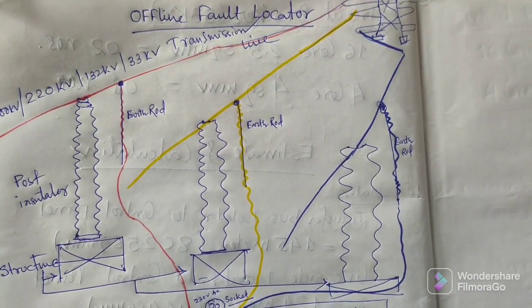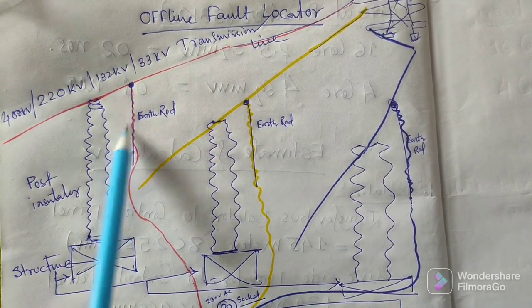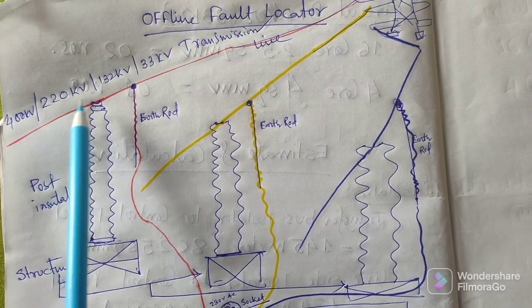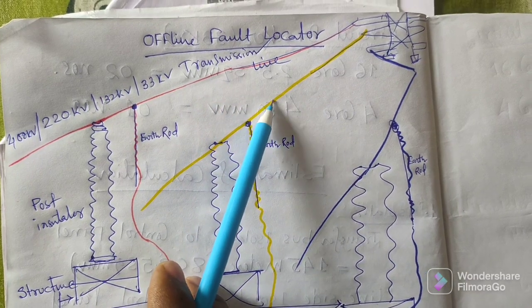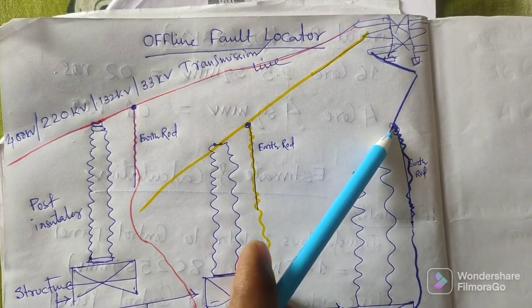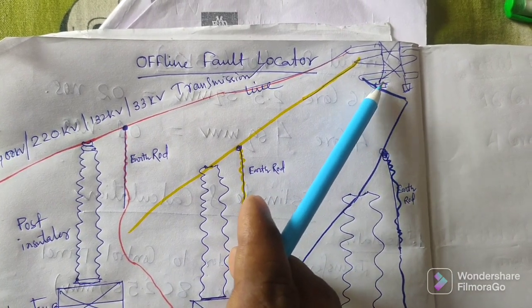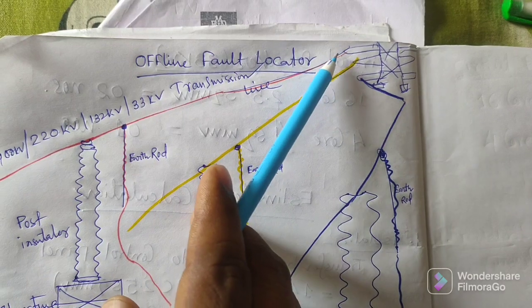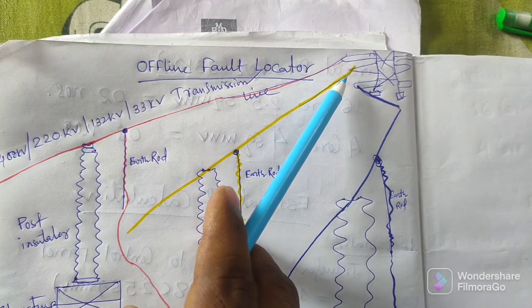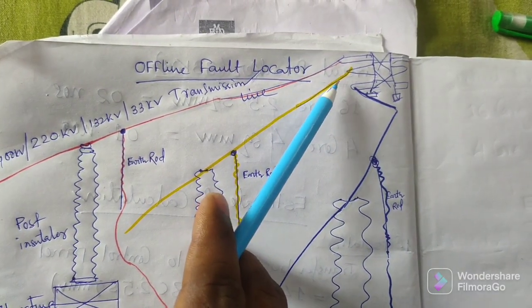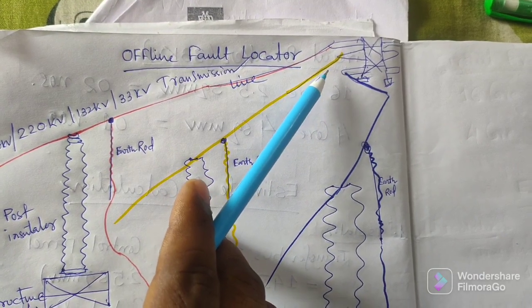This offline fault locator is used nowadays to locate the exact fault on the transmission line. Suppose this is a 400 kV, 220, 132, or 33 kV line — this is the red phase, this is the yellow phase, and this is the blue phase of the line. This is the transmission tower I have drawn. So red, yellow, blue — the transmission line conductors are going from one power plant to another and from one substation to another as required.